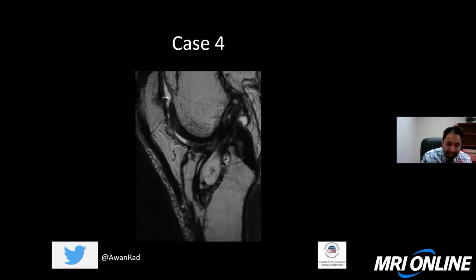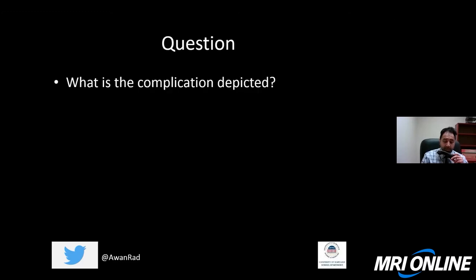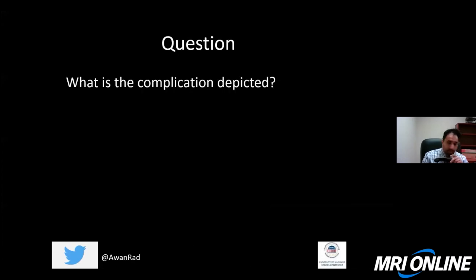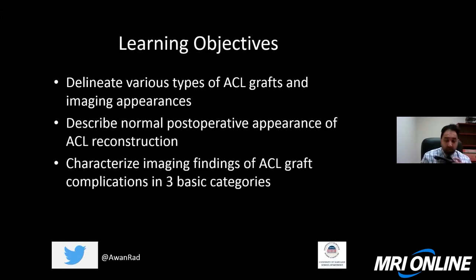In case four, the last case I'm going to show, we have a sagittal T2-weighted image through the knee in a patient that's had an ACL graft, and there is a finding and abnormality here. What's the complication that I'm showing you on this image? We're going to come back to all four of those cases at the very end.